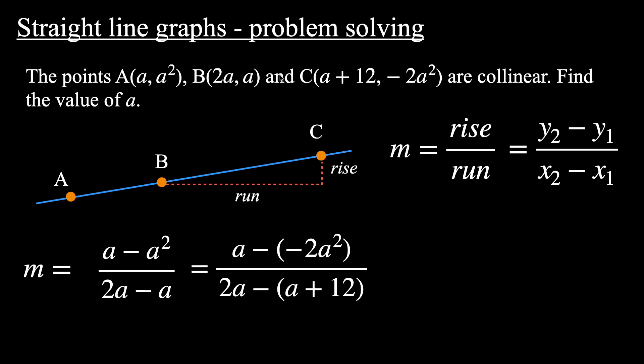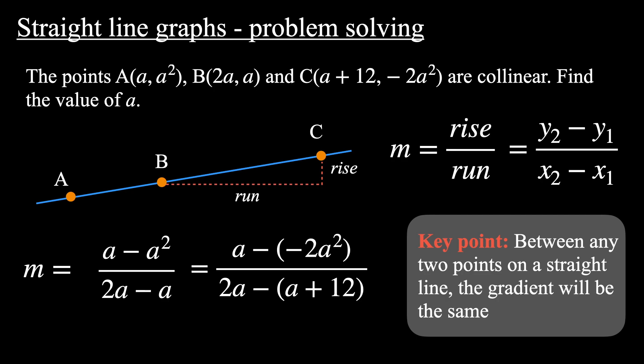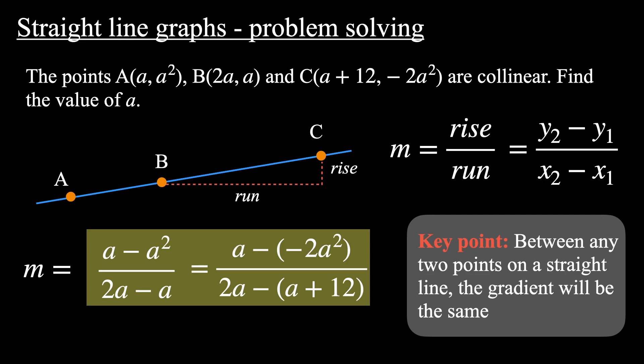So for B and C, I'm actually doing it the other way around. I'm going to do y₁ subtract y₂, so a take negative 2a² in the numerator here, and 2a, which is x₁, take x₂, so 2a subtract (a+12). This gives me an equation with a being the unknown, and I can solve this for a. So the key point you can take away from this question is that between any two points on a straight line, the gradient will be the same. Let's take this equation now and solve for a.